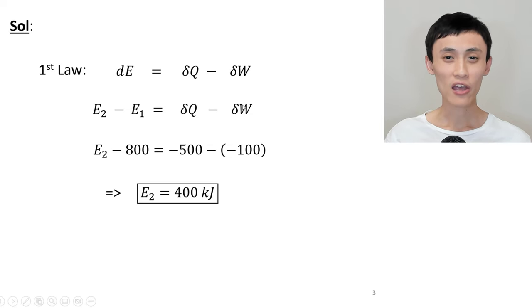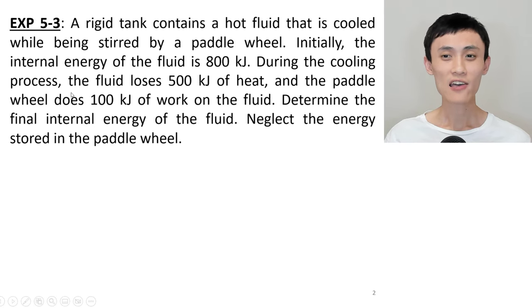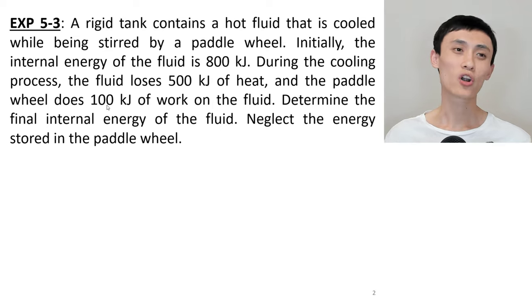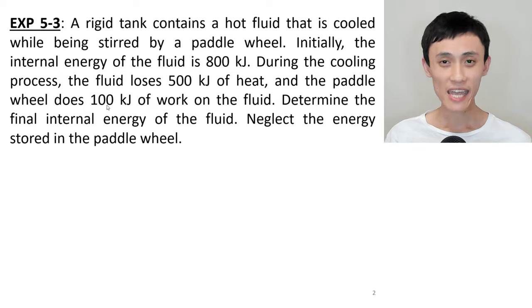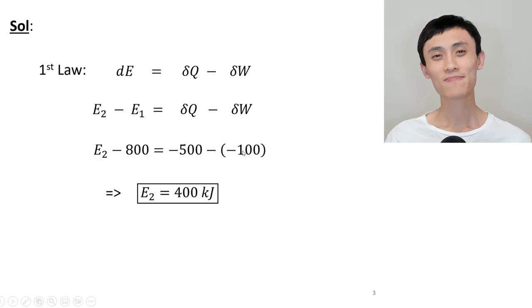Then the last term is work. It says the paddle wheel does 100 kJ of work. So it's work in, work into the fluid. Work in is negative, right? So with the calculation, our final energy is going to be 400 kJ. So this is the problem.